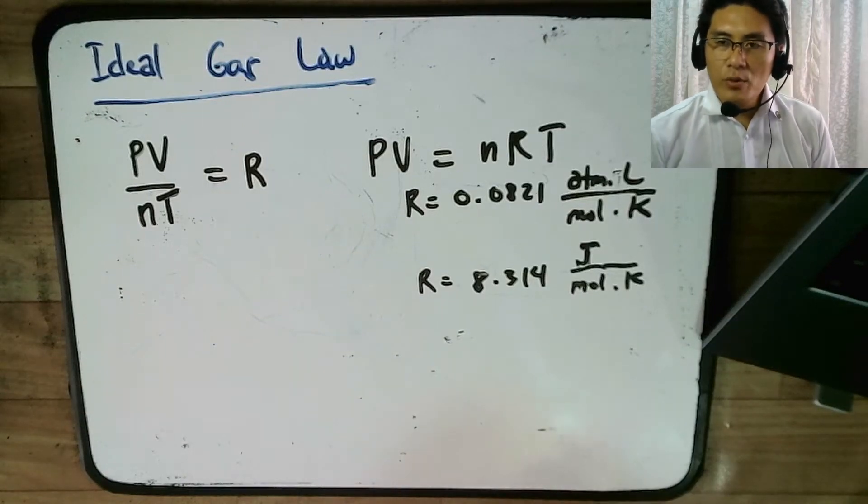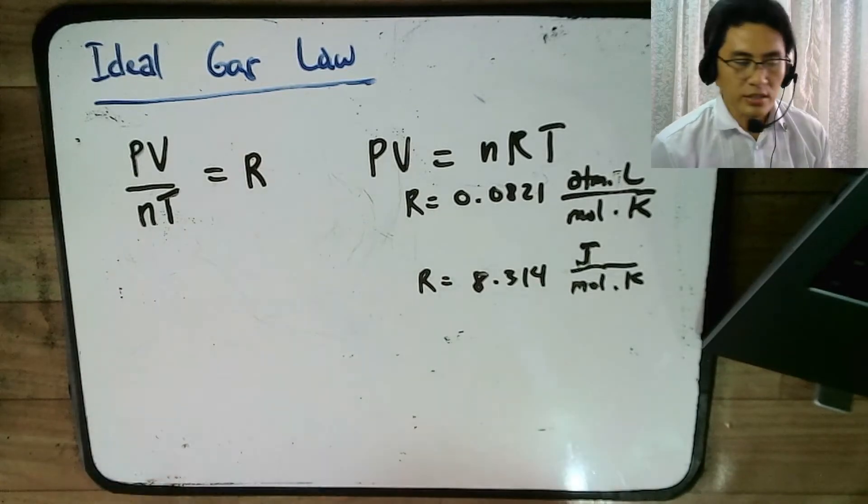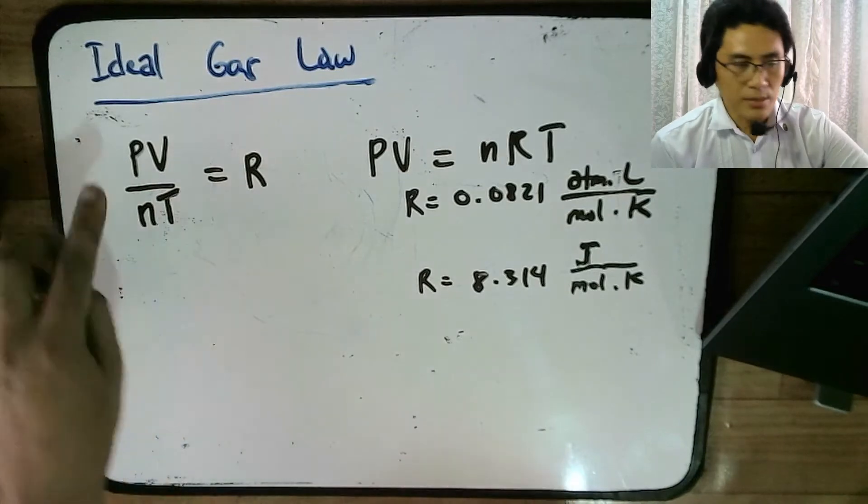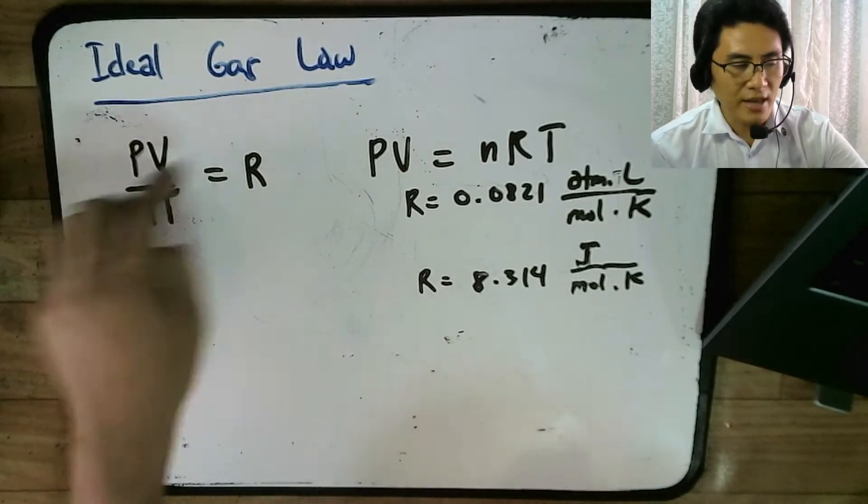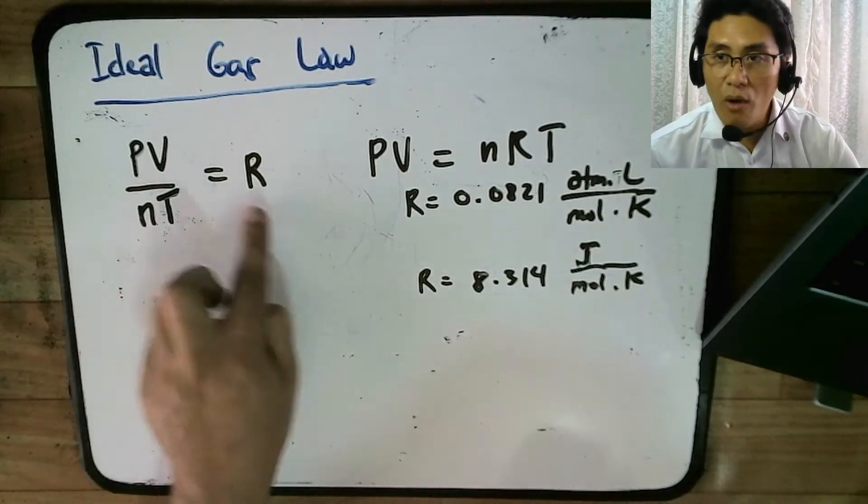Hello, this is Ideal Gas Law and we will be calculating some problems using the formula for Ideal Gas Law. So first of all, the Ideal Gas Law formulation is, our formula is pressure times volume of a gas divided by the number of moles and the temperature of the gas is equal to R.